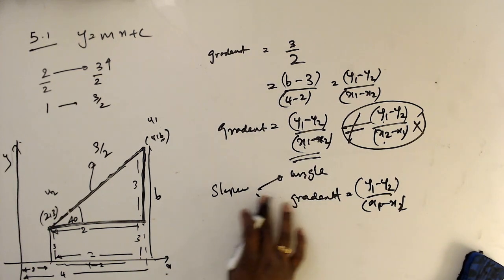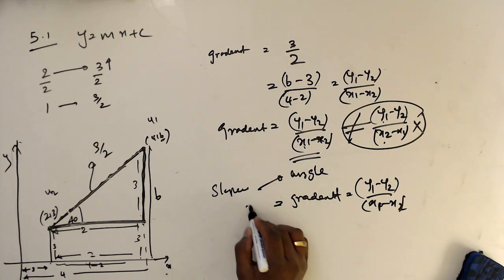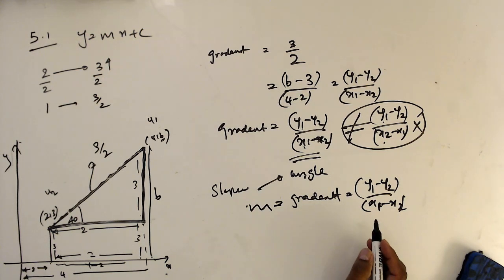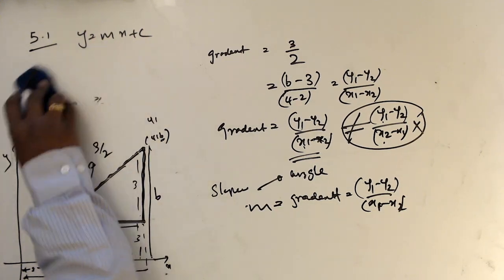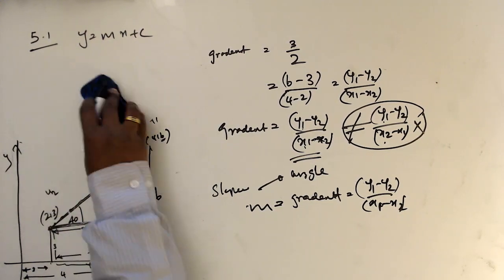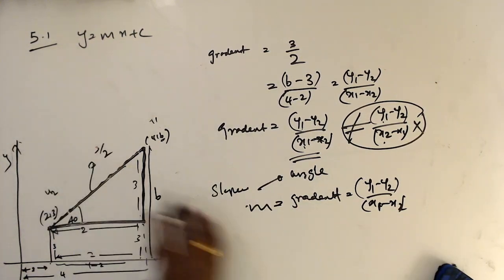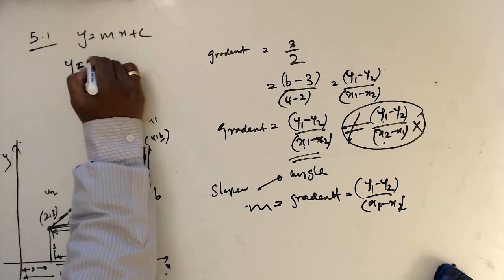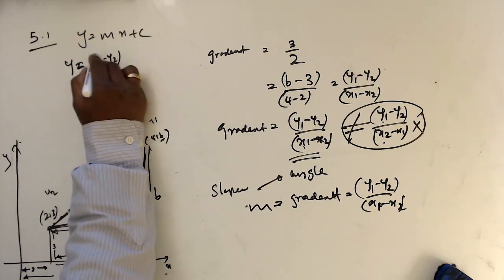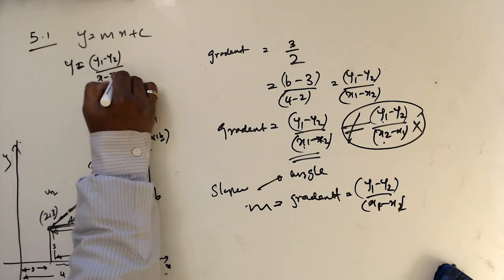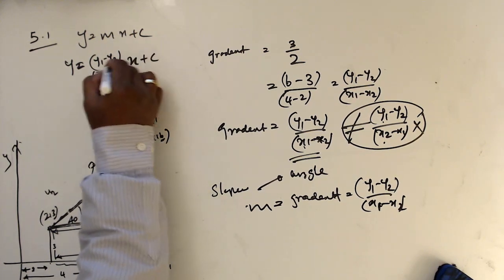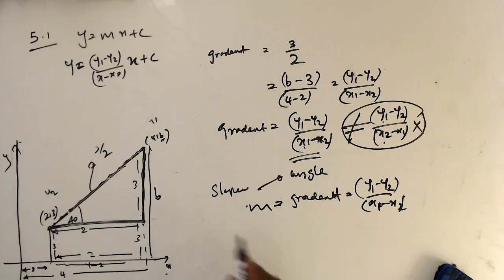We usually give the letter m to gradient. So the equation y = mx + c can also be written as y = [(y1 − y2)/(x1 − x2)]x + c, because m can be written that way.